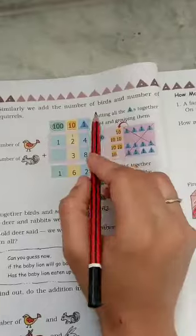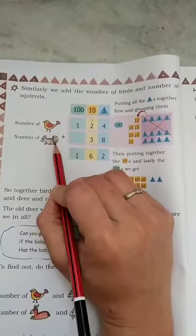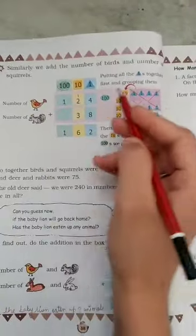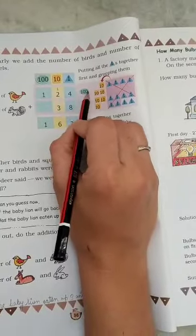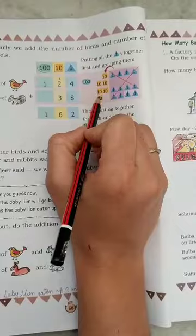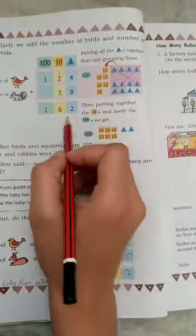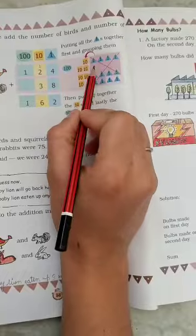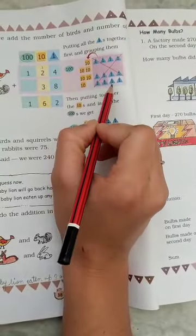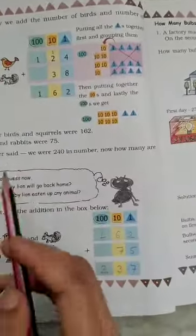Next, similarly we add the number of birds and squirrels. We are breaking and we add. First we have made 10, then converted to 10, then the remaining 1 and 2. That means 162. It has added.